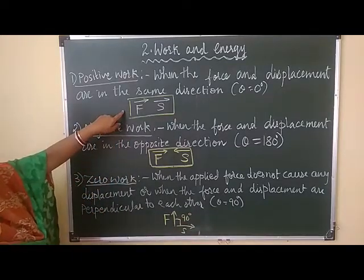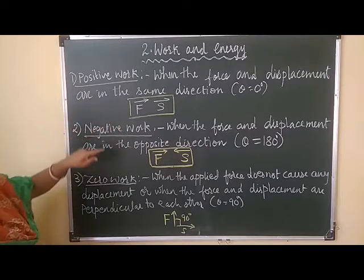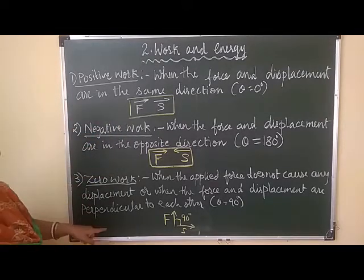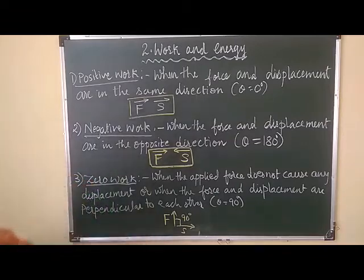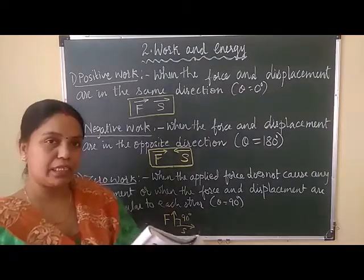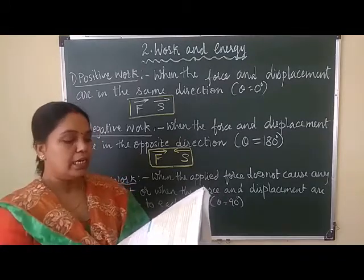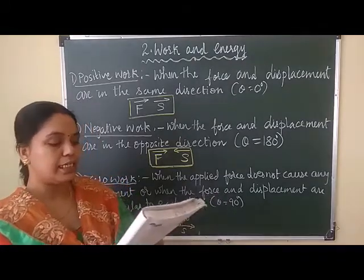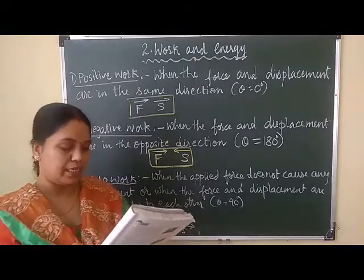You have understood this? First one: positive work. Next: negative work and zero work. Few examples are given in your textbook. You can look at page number 20. Try to understand these examples and you will give the answer.